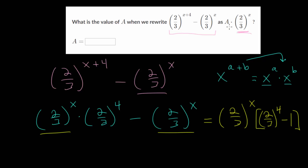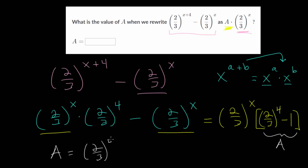Comparing it to what we're looking for — this a value — we're able to factor out the 2 thirds to the x power. So, that means that the expression here in brackets is our a value. So, a is just 2 thirds to the 4th minus 1. And if we want, we can simplify further.